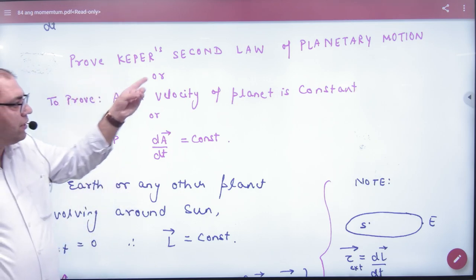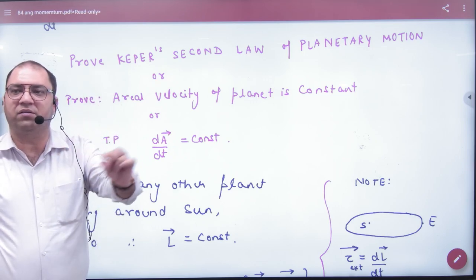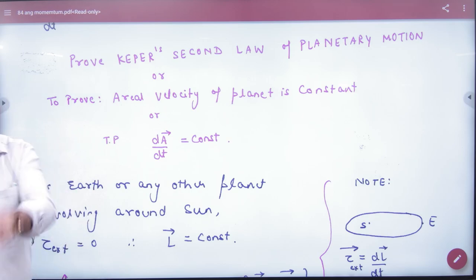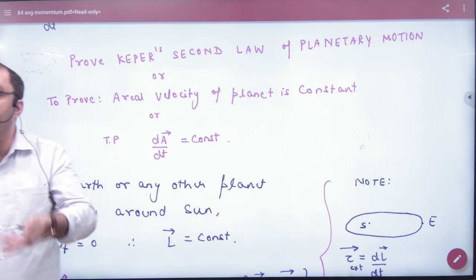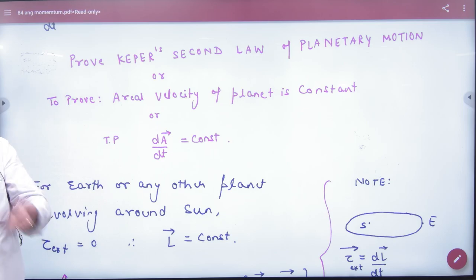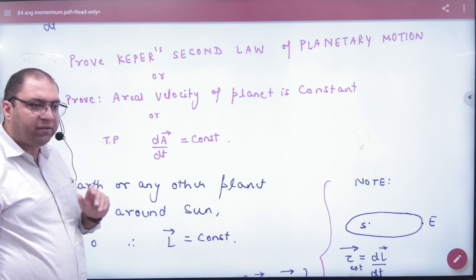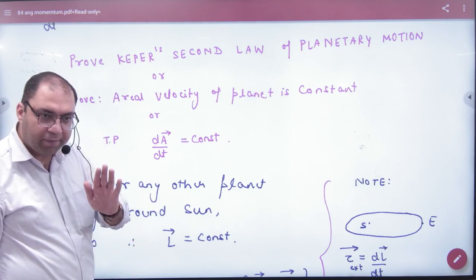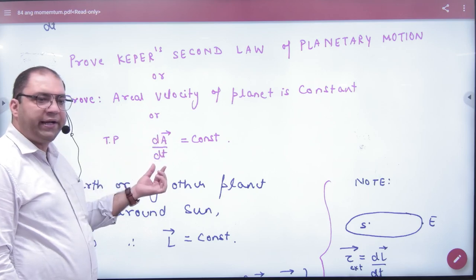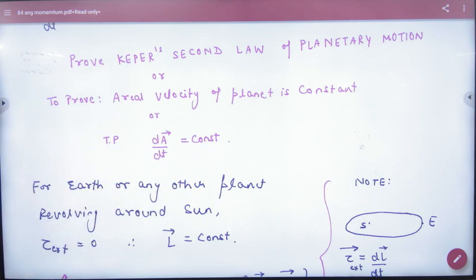Proof of Kepler's Second Law of Planetary Motion. This is totally clear. Proof of Kepler's Second Law. What is Kepler's Second Law? Prove that areal velocity of a planet is a constant. This will prove it. Or the question will be asked prove that areal velocity of a planet is a constant. Or he will ask prove that dA by dt is a constant. These three things will be told, Kepler's Second Law.